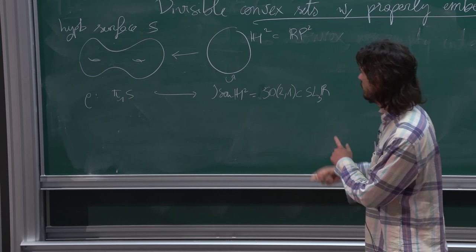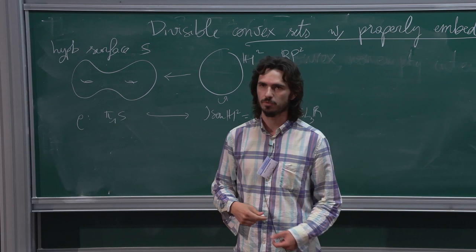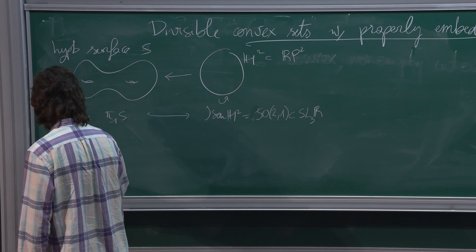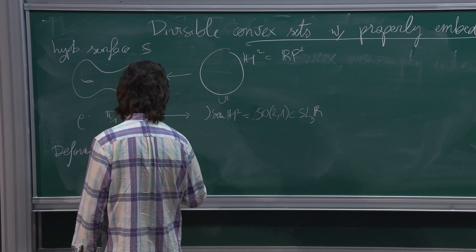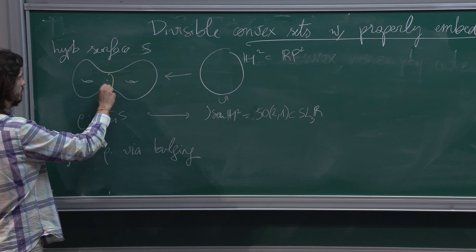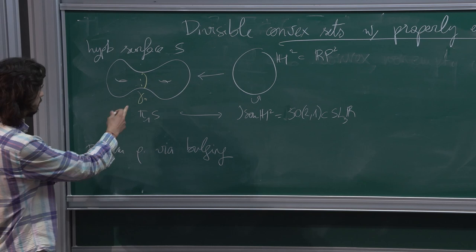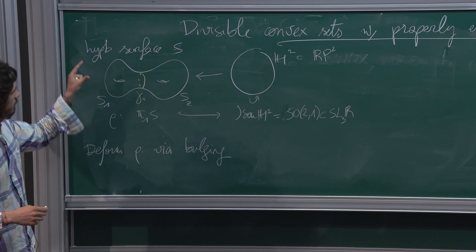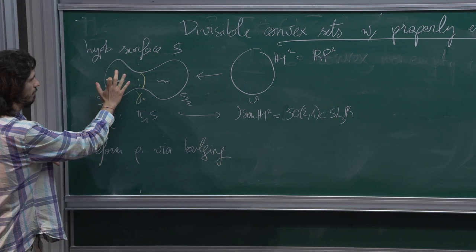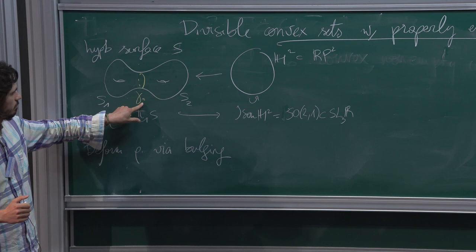Now we are going to deform the representation ρ via a technique called bulging, which is a special kind of bending. How do we do that? We fix a separating curve γ₀ in S. The idea of bulging — of bending in general — is that γ₀ separates S into two subsurfaces, S₁ and S₂, on the left and the right. And we are going to deform by not changing the representation on the left, and conjugating it on the right, using an element that commutes with ρ(γ₀).